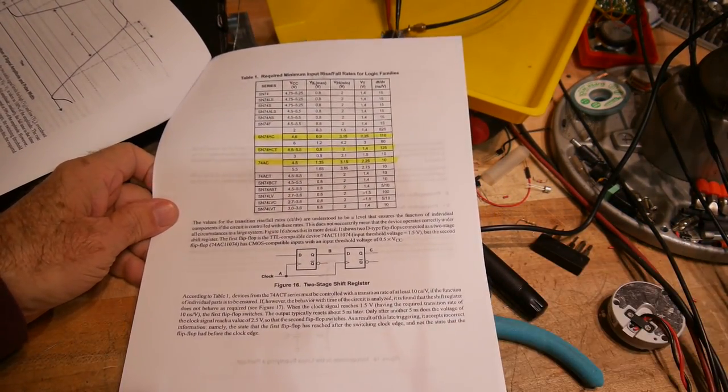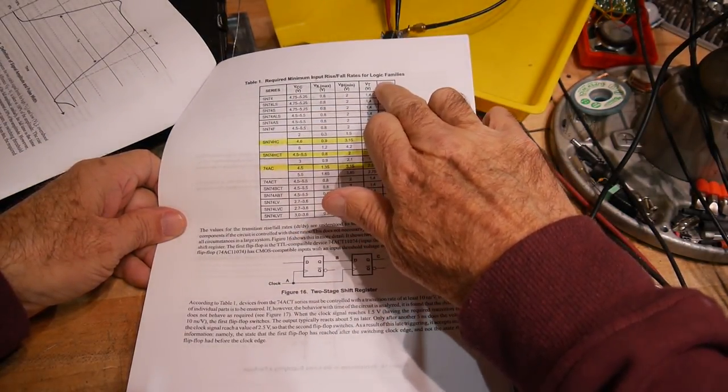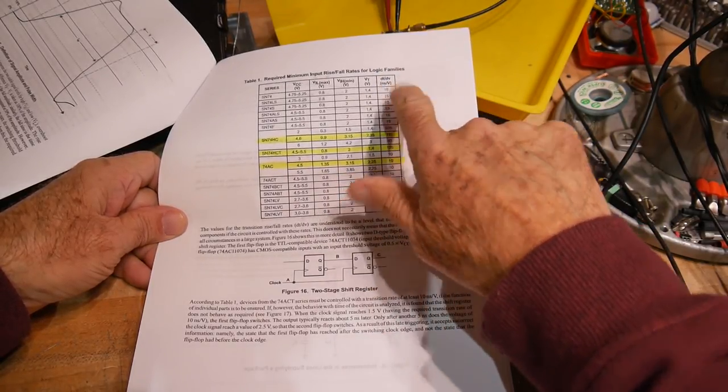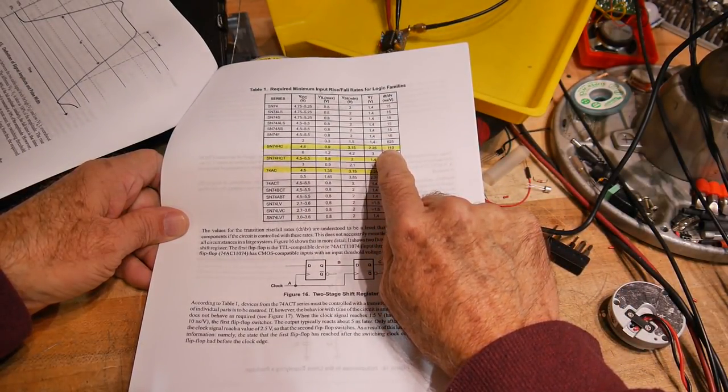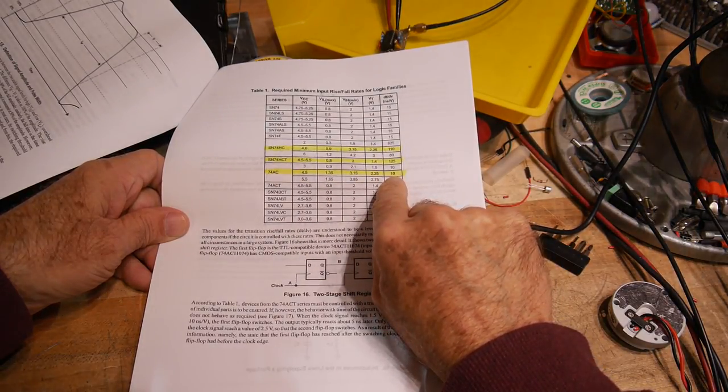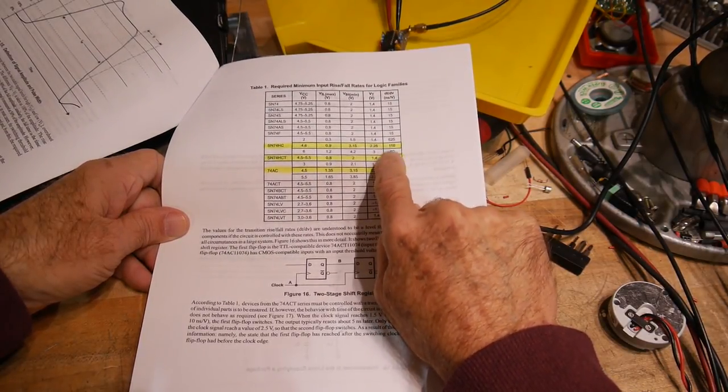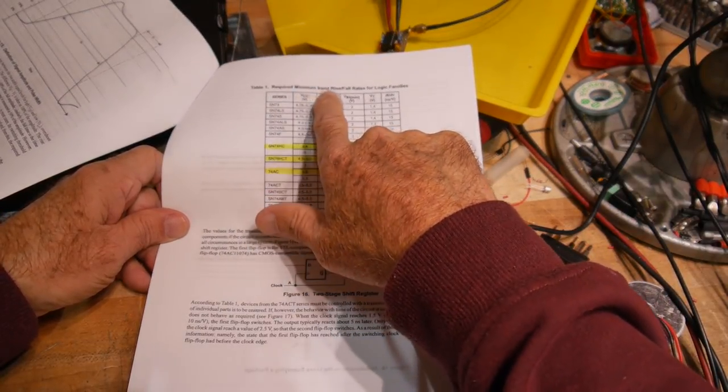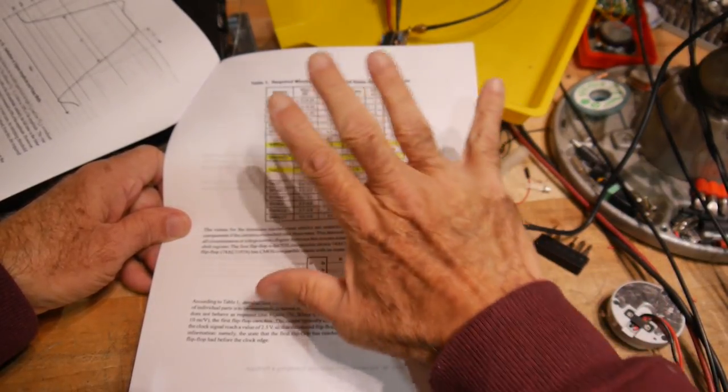It talks about an HC part having a... It gives it in values of DTDV. So... Nanoseconds per volt. And the HC part says 110 nanoseconds per volt. And it says the AC part is only 10 nanoseconds per volt. So it would say... Ah... The AC part is 10 times faster than the HC part. Well... This is required minimum input rise times. Not output. So these are for input values. So we can't use those.